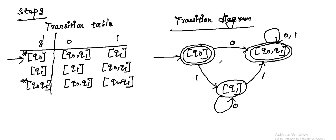Finally, we draw the transition diagram. Q0 is the starting state and final state. {Q0, Q1} is also a final state. Q0 with input 0 goes to {Q0, Q1}, Q0 with input 1 goes to Q1. {Q0, Q1} with input 0 goes to {Q0, Q1}, and {Q0, Q1} with input 1 goes to {Q0, Q1} — both inputs give a self-loop. Q1 with input 0 is a self-loop, and Q1 with input 1 goes to {Q0, Q1}.